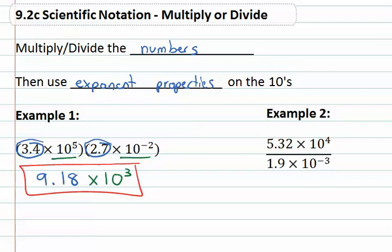Division works almost identical. If we have 5.32 times ten to the fourth over 1.9 times ten to the negative third, what we can do is divide the numbers first.